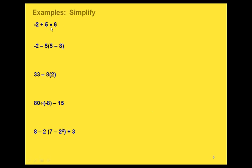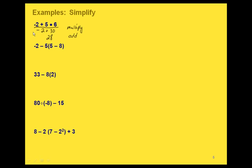Here are some examples. For this one, we have an addition and a multiplication. The multiplication comes first, so our first step is to multiply. We end up with negative 2 plus 30. Then we're going to add: negative 2 and 30 gives us 28. So our final answer is 28.